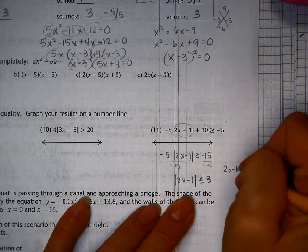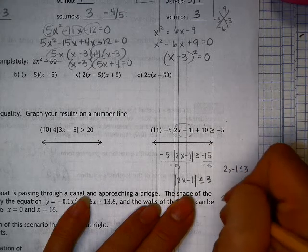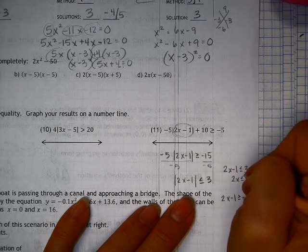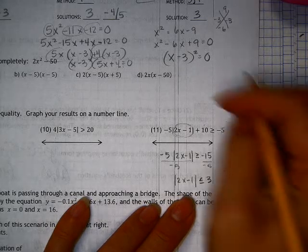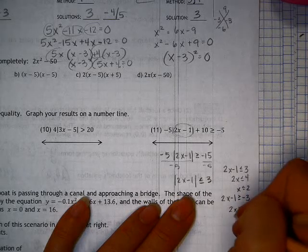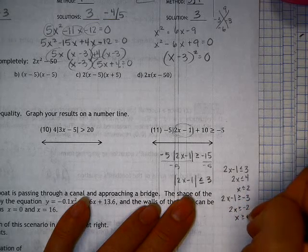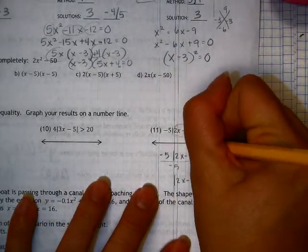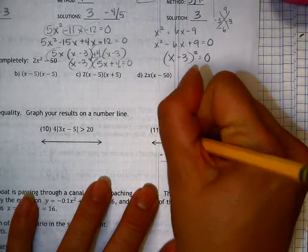So now I have that as less than or equal to 3, and 2x minus 1 is also greater than or equal to negative 3, so 2x is less than or equal to 4. And 2x is greater than or equal to negative 2, and x is greater than or equal to negative 1. So we have a 2 and a negative 1.